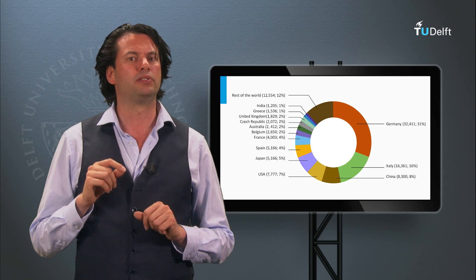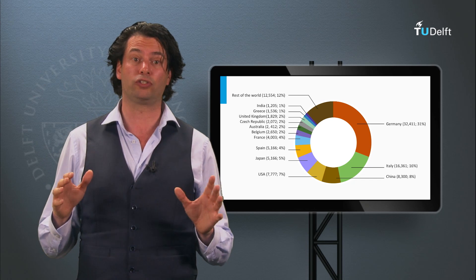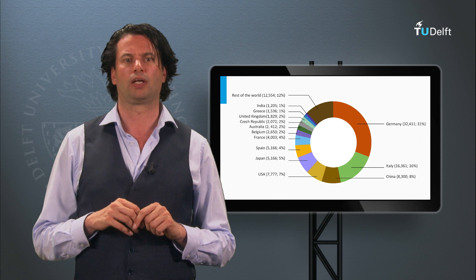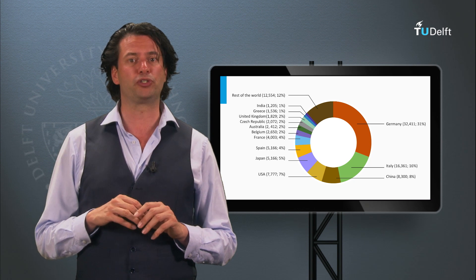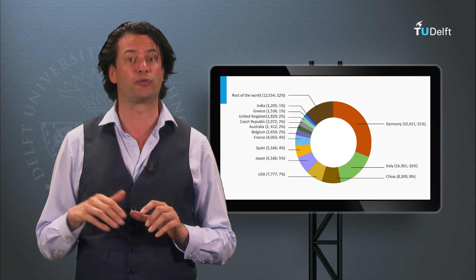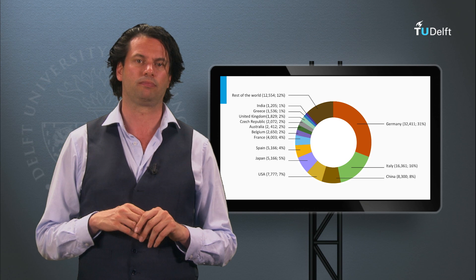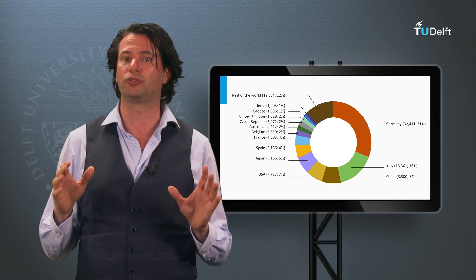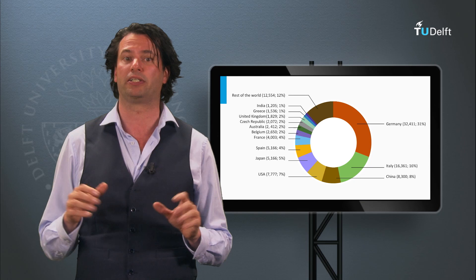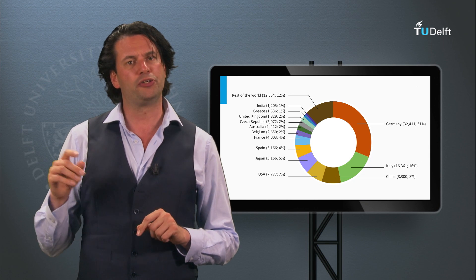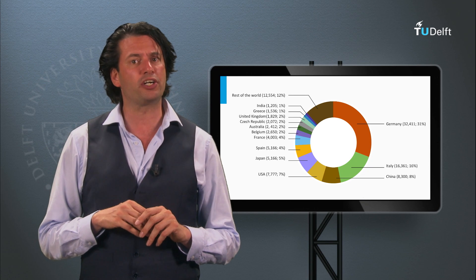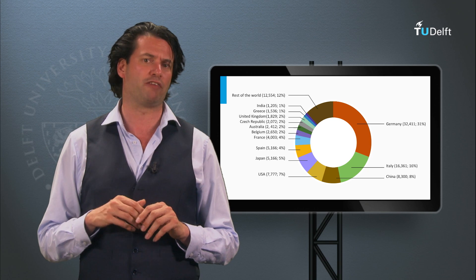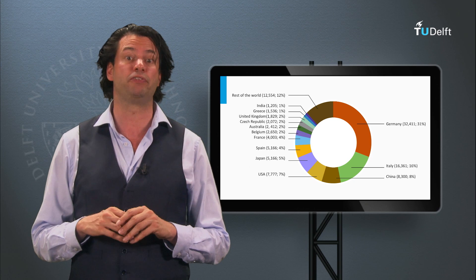The runner-up is Italy, which accounts for 16% of the worldwide PV capacity. China, with a contribution of 8%, is the fastest growing market at the moment. In 2010, China only contributed 2% to the global PV capacity. The United States, Japan and Spain are the other countries in the top 6, with a relative contribution of 7 to 5% to the worldwide installed PV capacity.